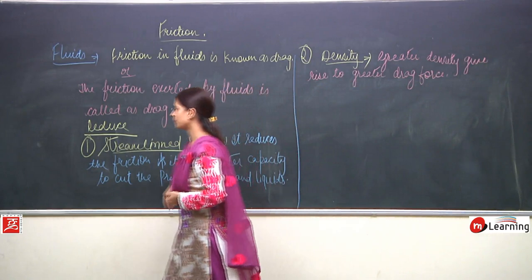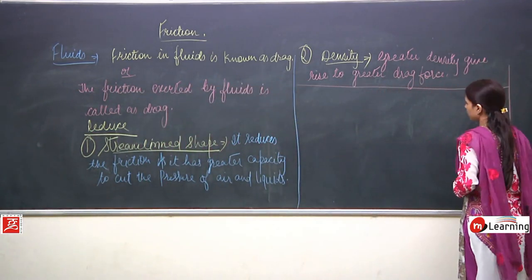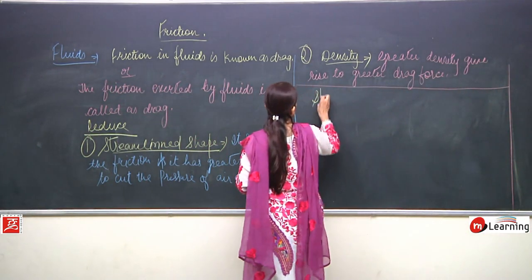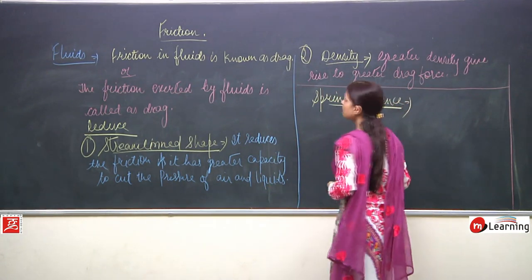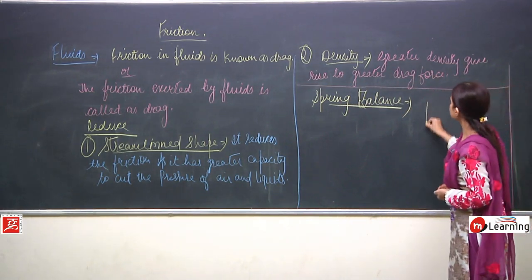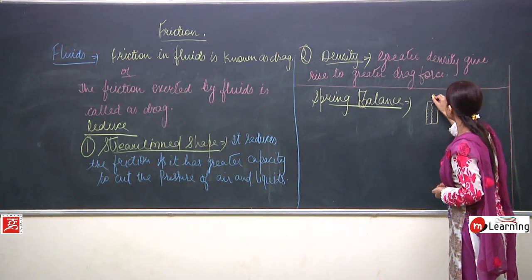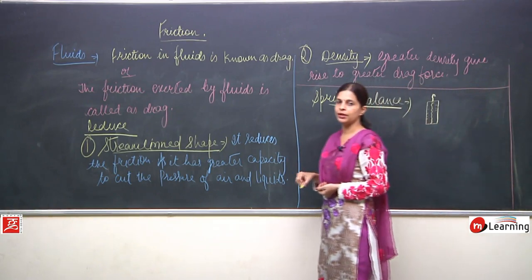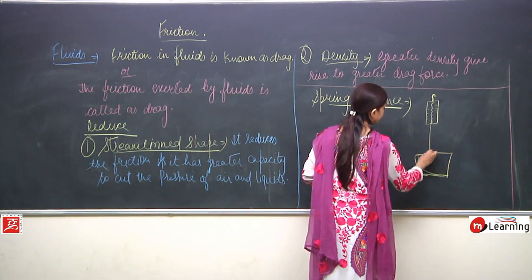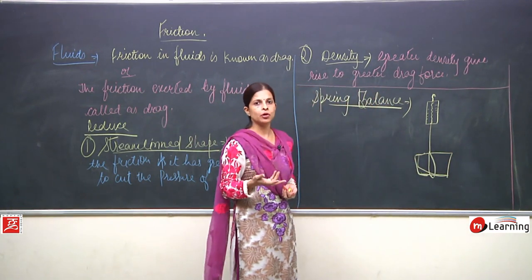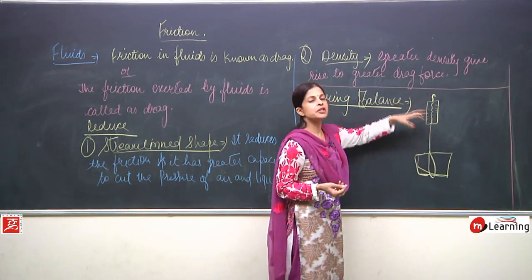Now we will talk about spring balance. Spring balance is an instrument which has a spring in it, readings can be taken on it, and there is a hook with which it can be attached to any object — a box, a brick. This instrument gives the reading of the weight, the force — how much weight is there, how much force has to be applied to move this weight.